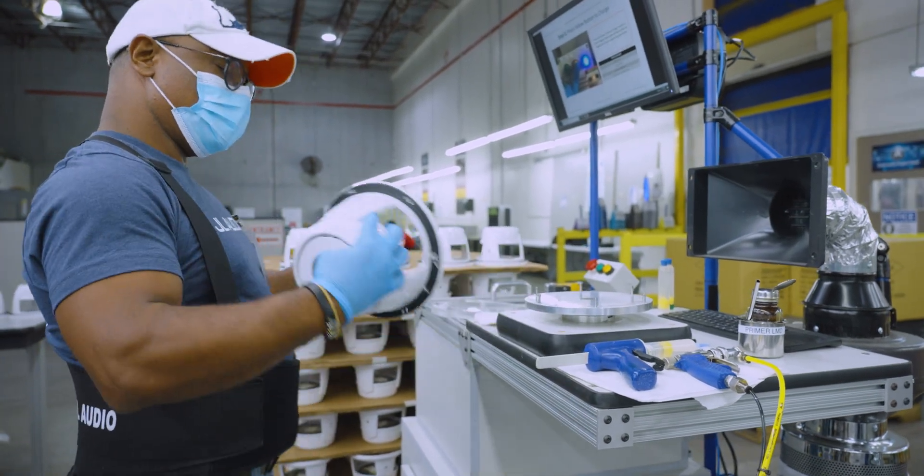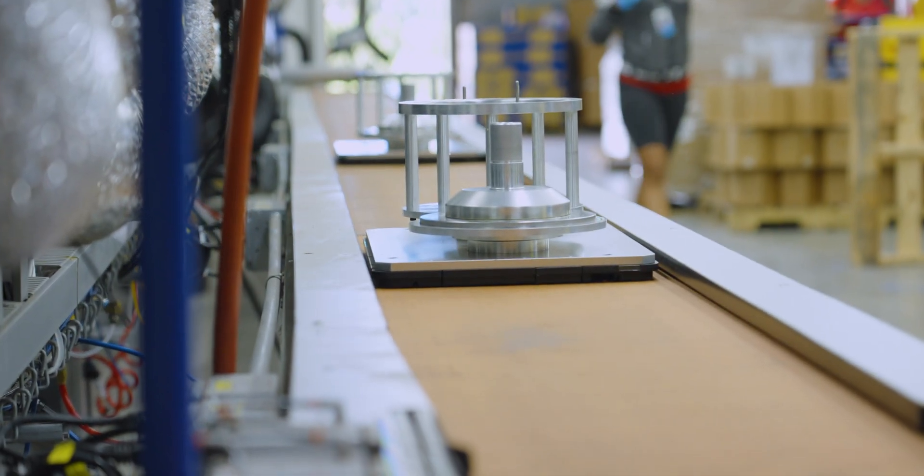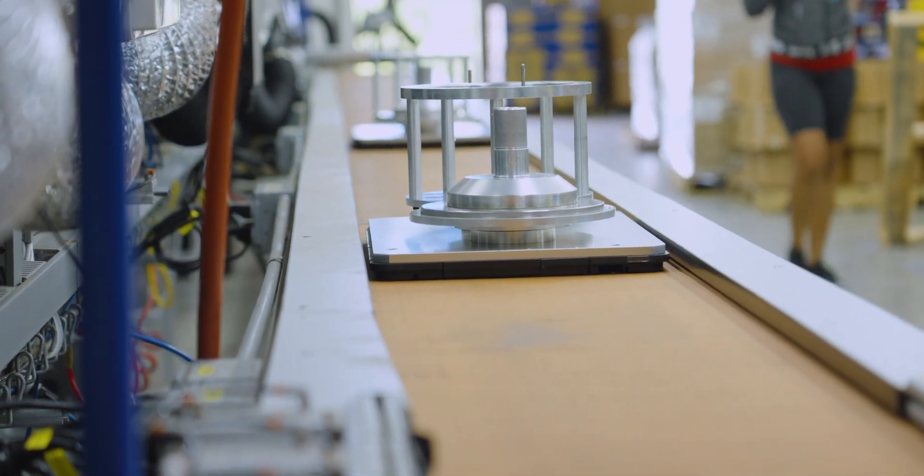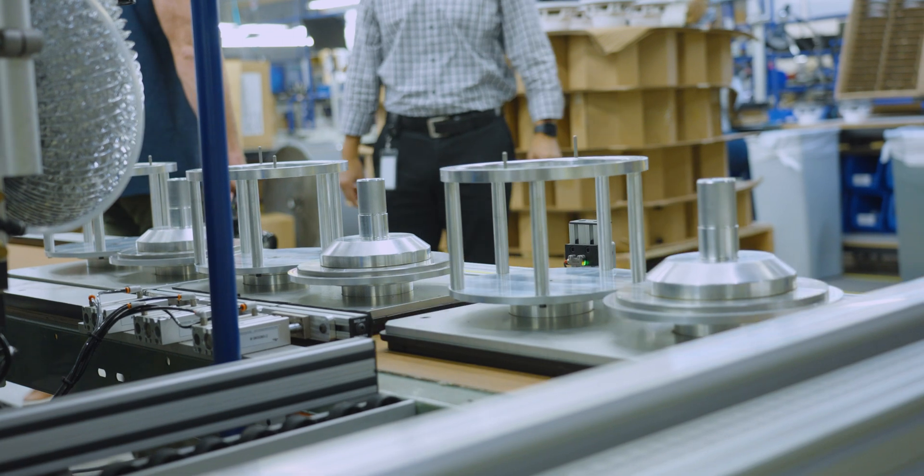From here on out, the speaker is placed onto a jig on a conveyor belt where it will stay until it's removed for packaging. This will help with proper fitment of all components and easy transportation from station to station.